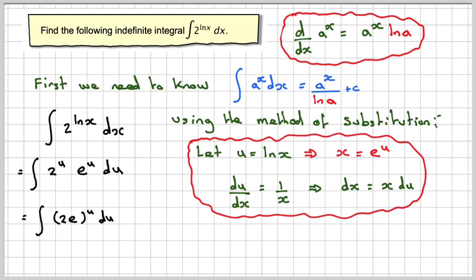Compare this with x, and we know the answer is going to be the same thing over the ln of whatever this bit is. So this becomes 2e to the u over ln 2e, and don't forget the c.